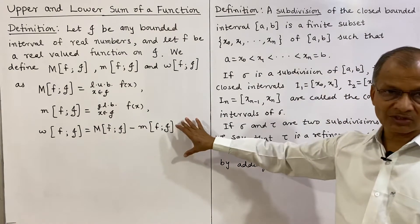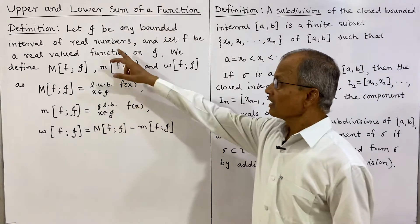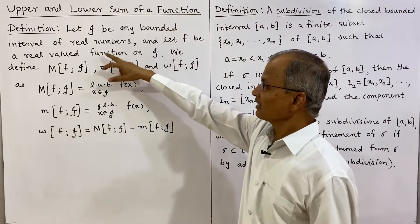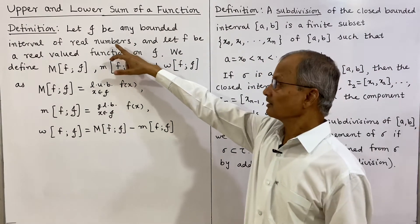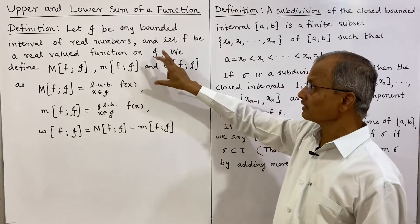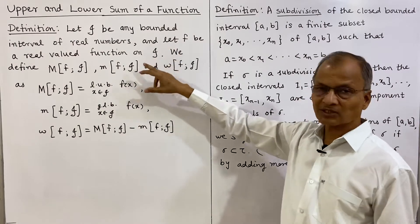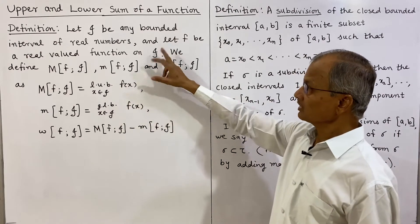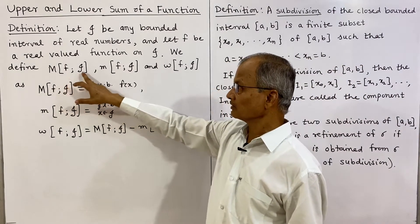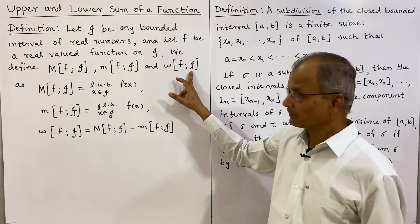Here I have written a few definitions and these are easy to understand. The first definition is: let J — this is a script letter J or curly letter J — used to denote any bounded interval of real numbers. Let f be a real-valued function on this bounded interval J. We define three terms: capital M of f on interval J, small m of f on interval J, and omega of f on interval J, as follows.